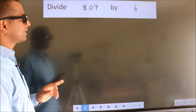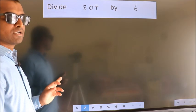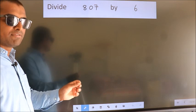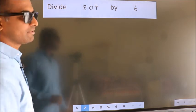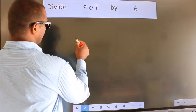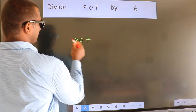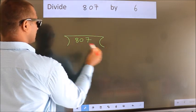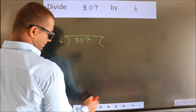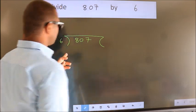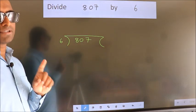Divide 807 by 6. To do this division, we should frame it in this way. 807 here, 6 here. This is your step 1.